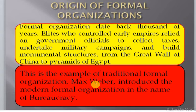Regarding the origin of formal organization: formal organizations date back thousands of years. Elites who controlled early empires relied on government officials to collect taxes, undertake military campaigns, and build monumental structures, from the Great Wall of China to the Pyramids of Egypt. This is the example of the traditional formal organization. Max Weber, who was a sociologist, introduced the modern formal organization in the name of bureaucracy.